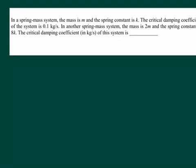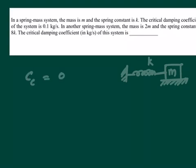We have a spring-mass system. Let's say we can think something like this: we have a spring and then we have a mass. The critical damping coefficient of the system is given as c_c is 0.1 kg per second.